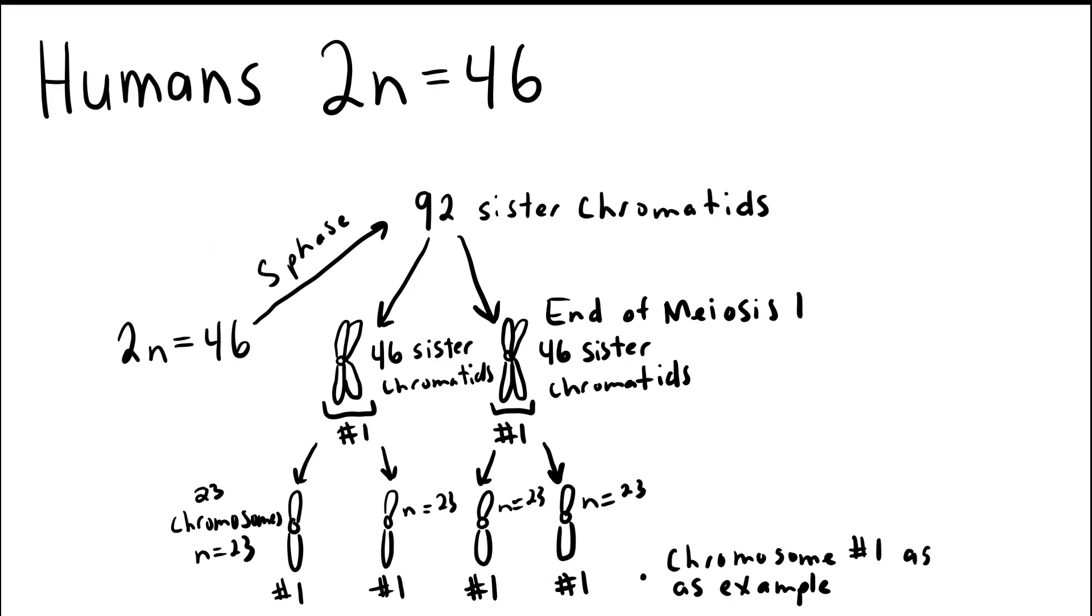So let's review the process of meiosis in humans from the chromosomal perspective. The human 2N is 46. That means there are 46 chromosomes in diploid cells. The cells that make gametes themselves are diploid. So we're going to start meiosis with a diploid cell with a 2N of 46. It has 46 chromosomes.